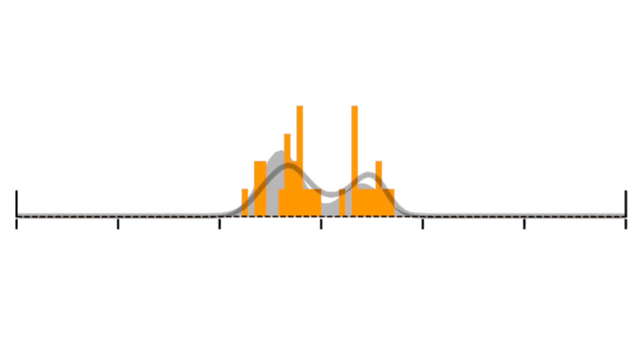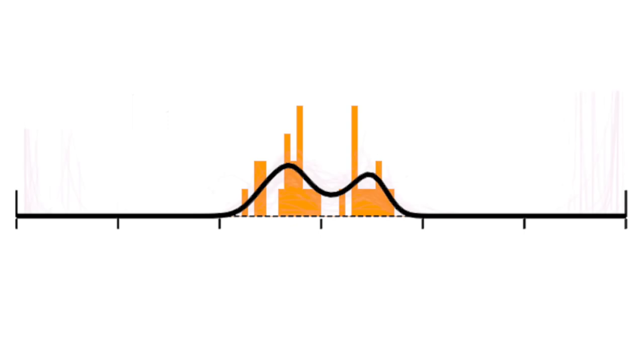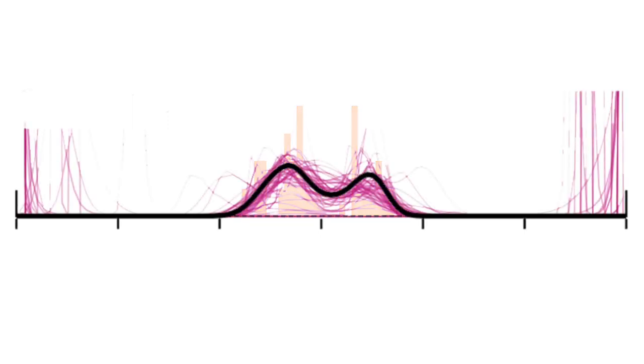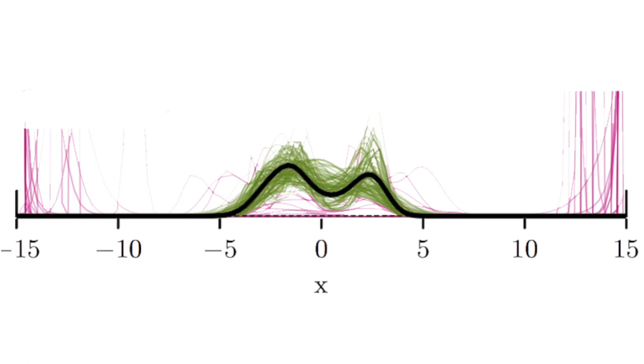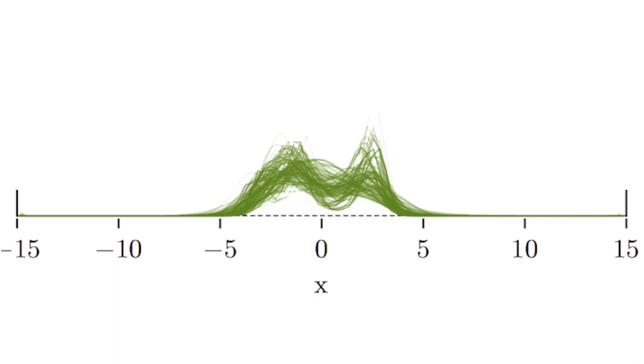So what we did is, using tools from theoretical physics, an area called field theory, we developed a method and implemented it in software that allows us to exactly quantify not only the best estimate for a probability distribution from a small amount of data, but how uncertain we are in that estimate.